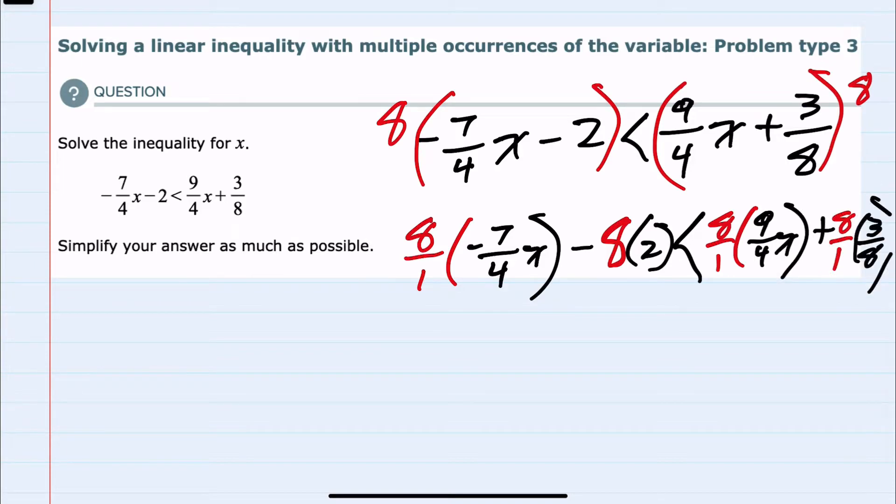From here, there's going to be a lot of simplification because 4 goes into 8 twice. So 2 times negative 7 would be negative 14x. The 8 times the 2 minus 16. Again, the inequality has stayed the same because I'm only multiplying the left and right by 8.